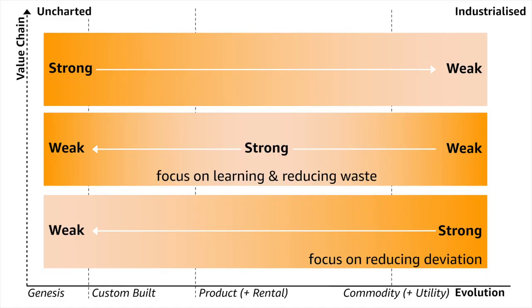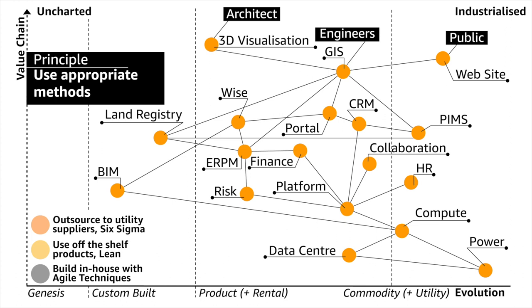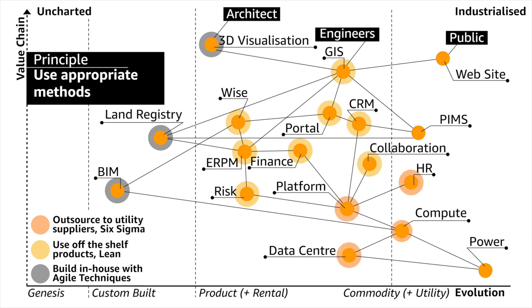Because of this you need to use different methods of management. Agile and extreme programming are very good on the left-hand side of the map because they allow for change — and what you need on the left is to reduce the cost of change, because change will happen; it's uncertain and uncharted. On the right-hand side you don't want change; you want to reduce deviation, which is why things like Six Sigma and outsourcing work well. In the middle you want to learn about the thing, which is why Lean, Scrum, and MVP — Minimal Viable Product — are ideal. So on the left-hand side we build in-house with agile techniques; in the middle we use off-the-shelf products or Lean; on the right-hand side we outsource with utility providers.